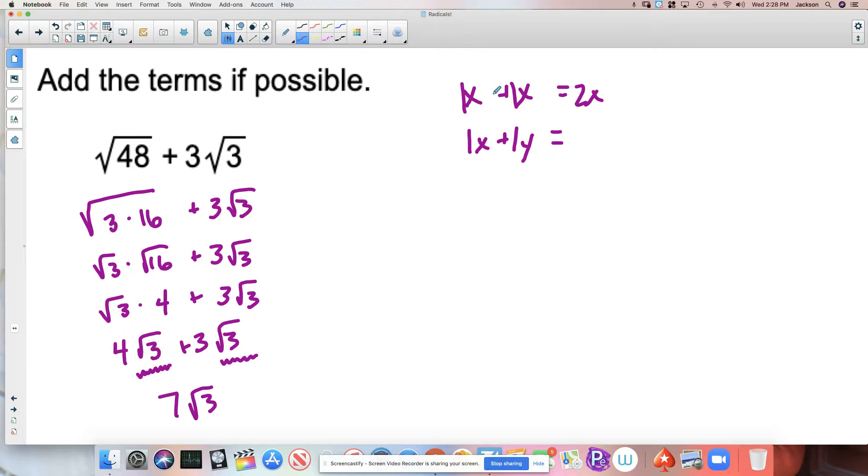Same idea, right? 1x plus 1x is 2x. I didn't change the variable that was in this space. I just wrote it again and said, hey, I now have 2 of those, right? So I'm not doing that with the radicals. I say I have 4 radical 3s here and I have 3 radical 3s. That means I have 7 radical 3s. I don't have 7 radical 6s. That's not how it works, okay?